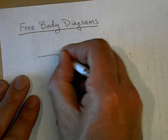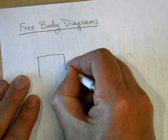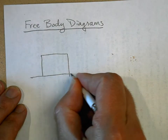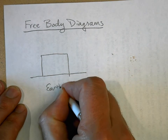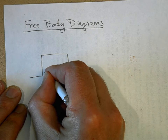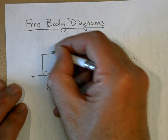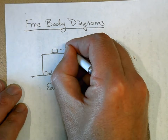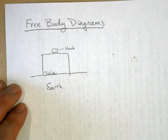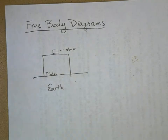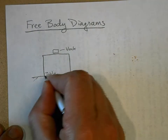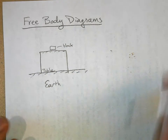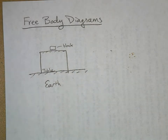Here's our table, and here's the earth below the table. So this is earth, and this is the table. And then here's our little block of wood — I'll just call it a block. Now, all of these objects are applying forces to each other. This is a solid surface and this is a solid surface. They're all applying forces to each other, and what we want to do is show all of those forces.